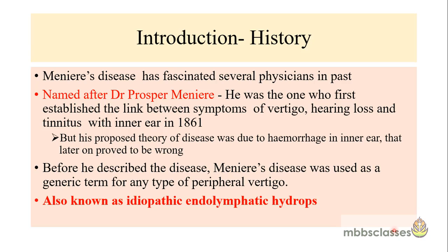Before we start the disease proper, let us spare a few moments on the history because the history of Meniere's disease is very interesting. This disease has fascinated several physicians in the past. It is a disease of the inner ear characterized by a symptom complex comprising spontaneous episodic attacks of vertigo, fluctuating type of hearing loss, and tinnitus. The link between these symptoms and the inner ear was established by Dr. Prosper Meniere, and because he established this link, in the year 1861, this disease is named after him.